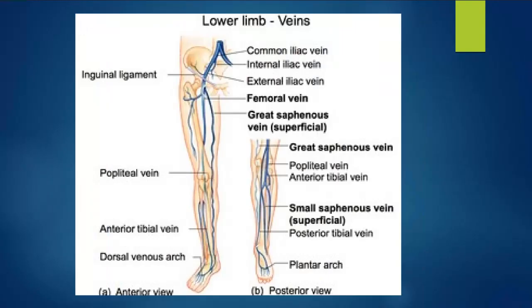Here's another example — a little blurry but you can see the posterior view on the right-hand side showing some of those calf veins. We're not really showing the peroneal veins here, but we just want to be aware of the relationship of where these veins are joining and what vein drains into what to become a new vein.